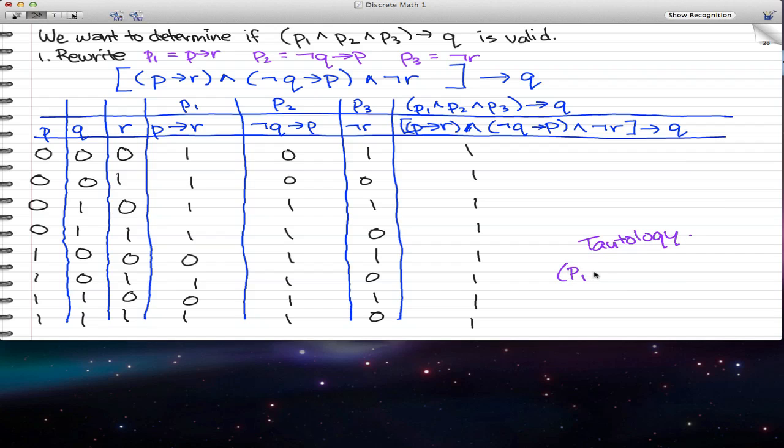What we set out to find is P1 and P2 and P3. We wanted to find if this implication is valid. Well, we checked it out and it fits the bill. It's all ones, it's a tautology. So the answer is, yeah, it is valid. I hope you got that right.